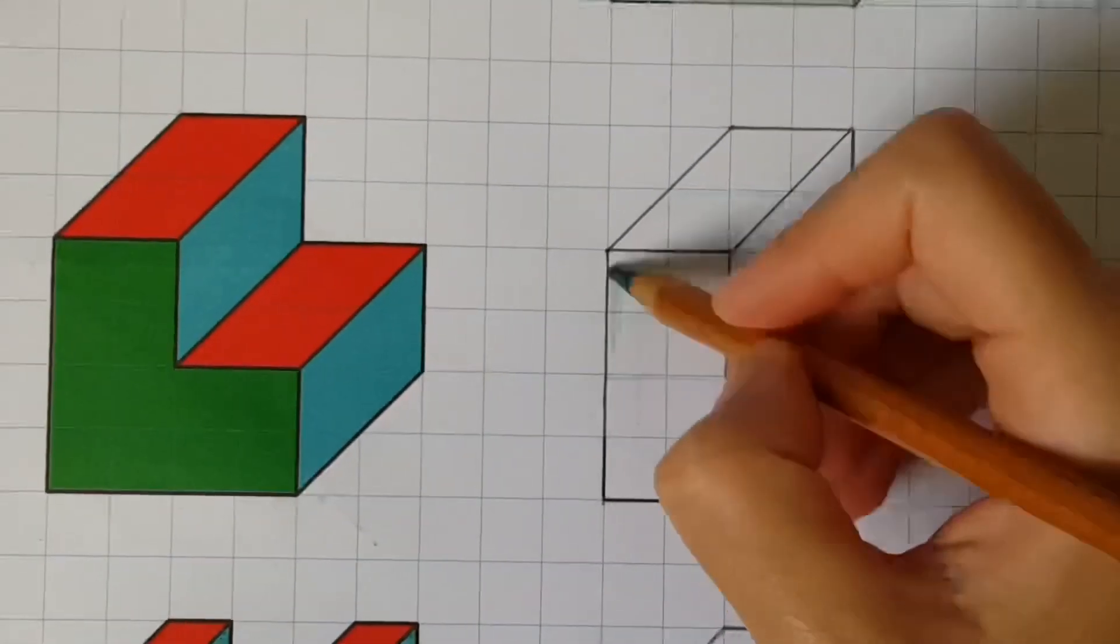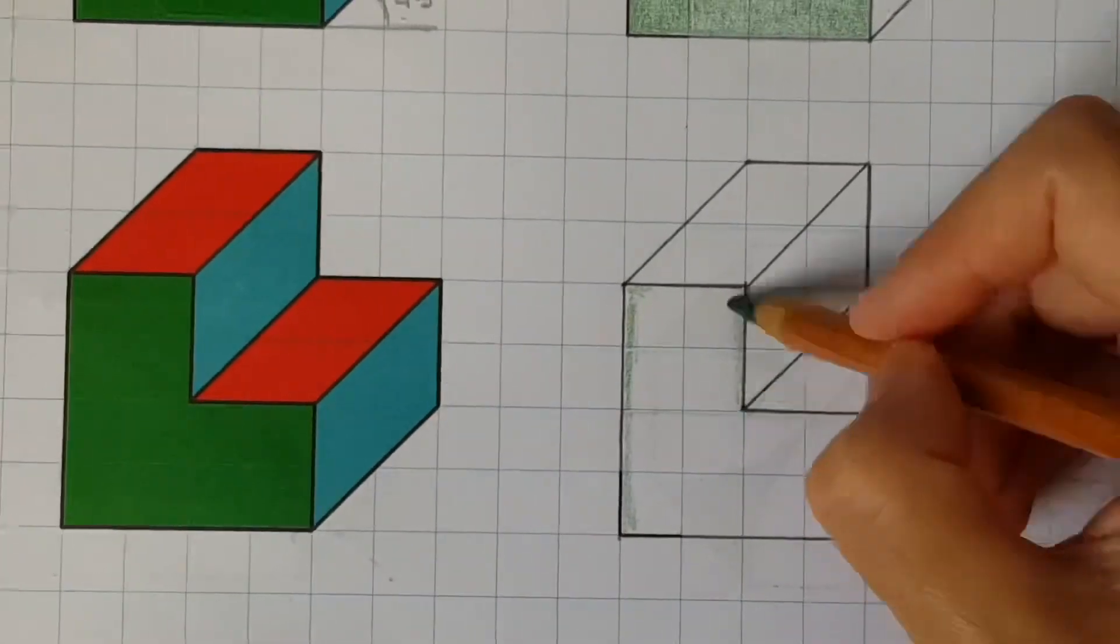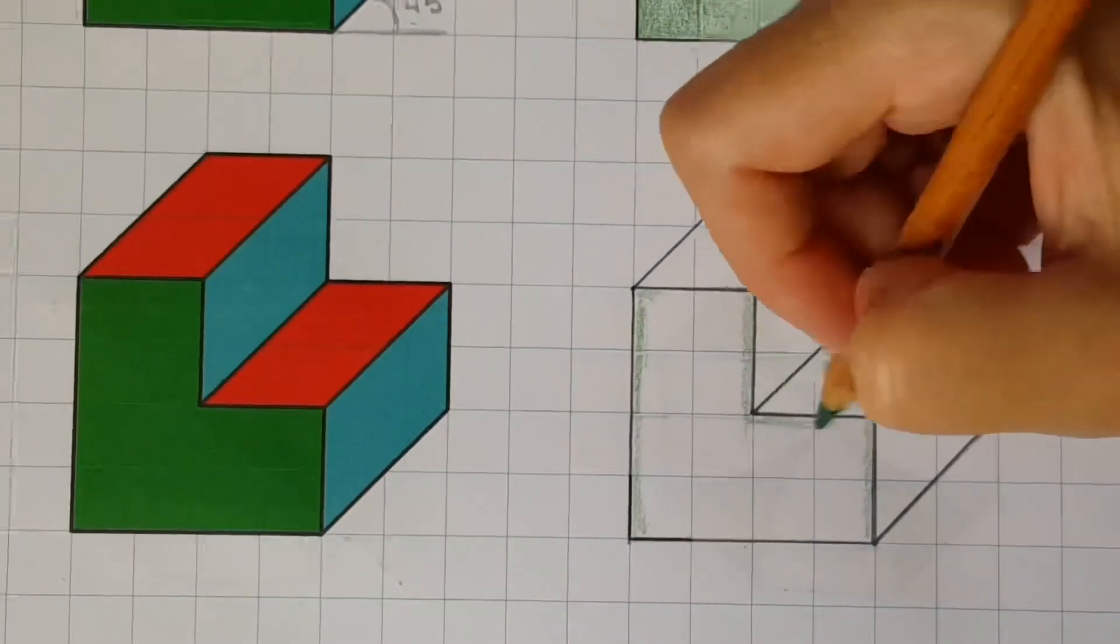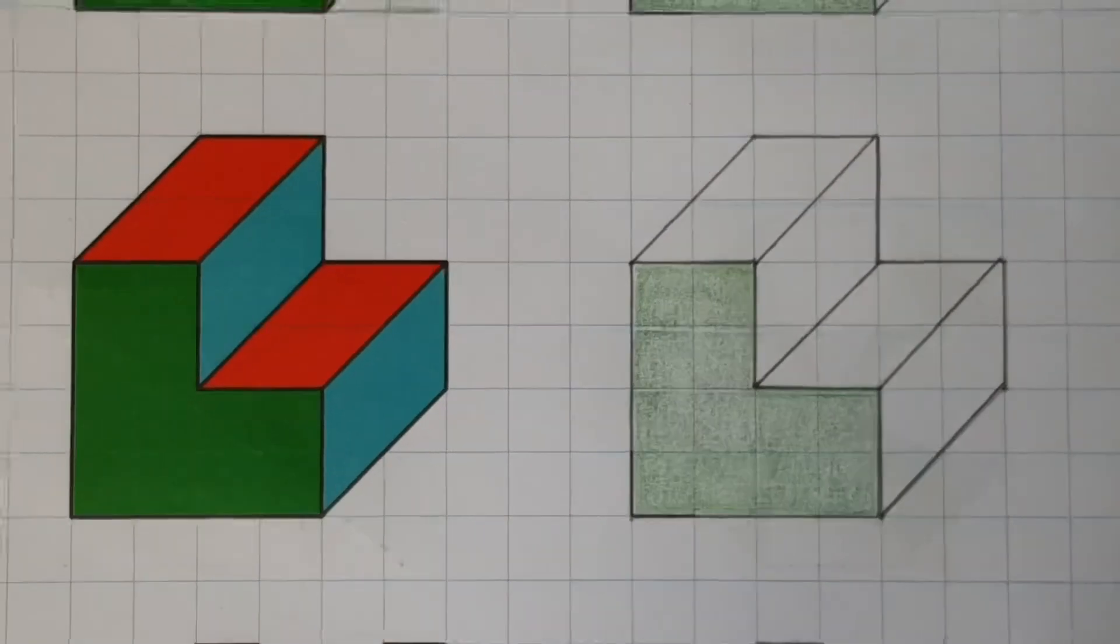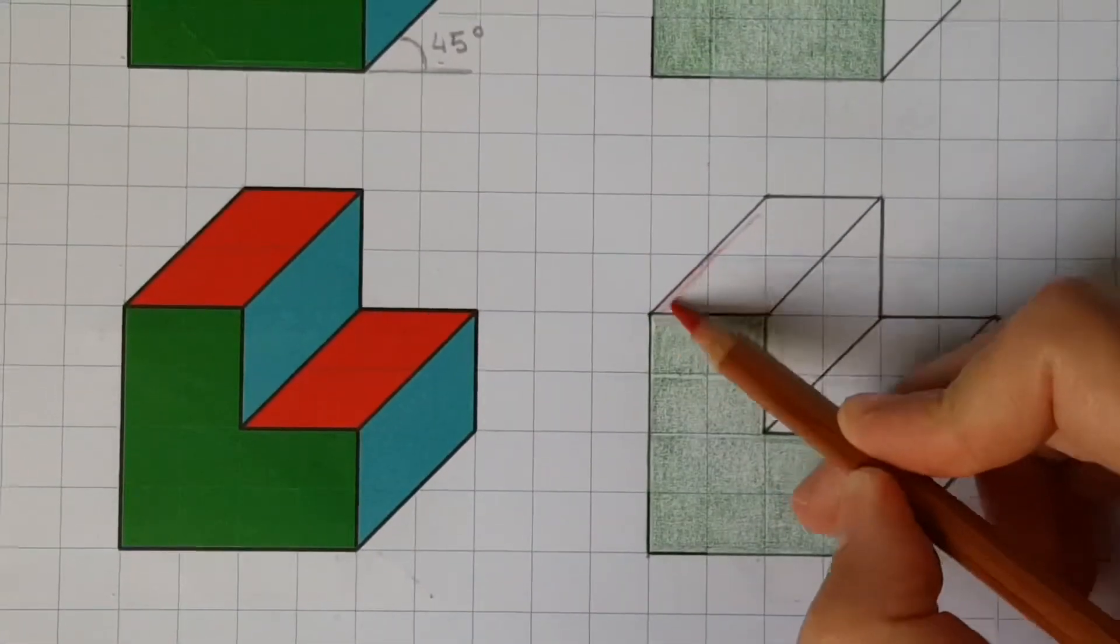Now let's move on to shading the three views. The front view is always going to be shaded in green. The end view is going to be shaded in blue and the plan will be shaded in red.